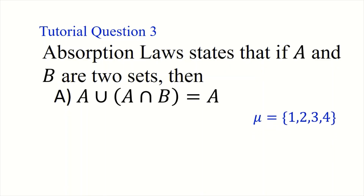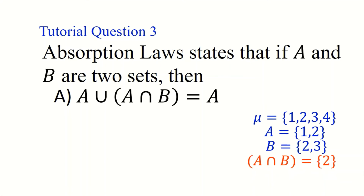To explain this, let's consider a universal set of {1, 2, 3, 4}, with set A as {1, 2} and set B as {2, 3}. A intersection B is the element in A and also in B, which is 2. Now, A union (A intersection B) gives us {1, 2}, which equals A. That is what the absorption law says — A absorbs B. That is the first case of absorption law.